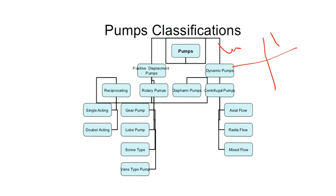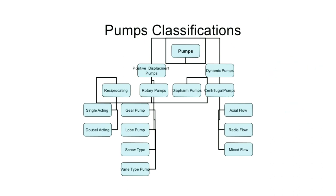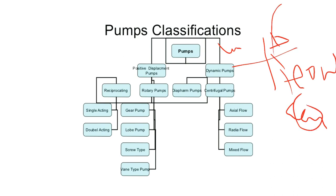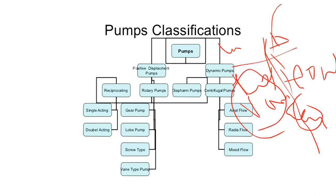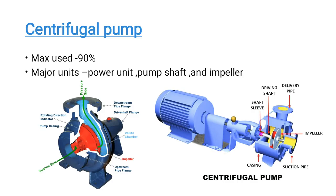In a centrifugal pump, flow varies when we change the pressure — flow is not constant. In a positive displacement pump, flow is constant regardless of pressure changes. This is a very important distinction: centrifugal pump flow varies with changing pressure, while positive displacement pump flow remains constant.